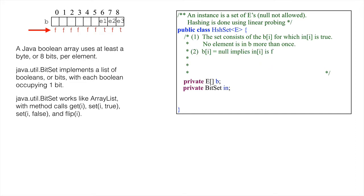Second, since null is not allowed in the set, b[i] = null implies that in[i] is false. Third, to enforce that remove cannot set an element to null, we say the following.